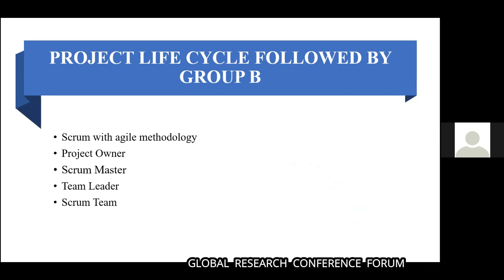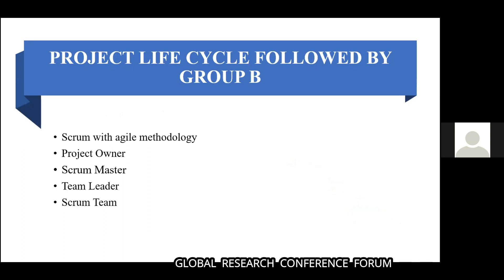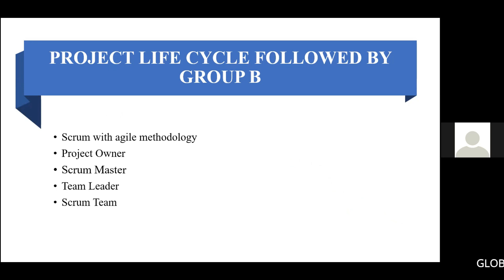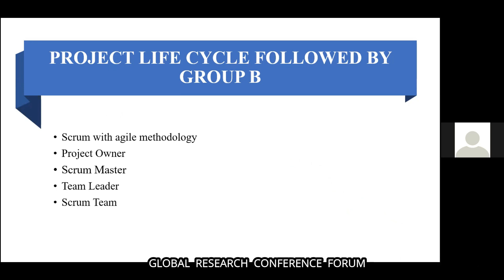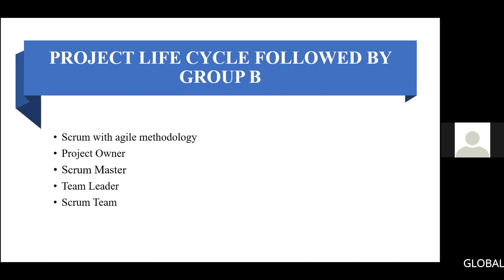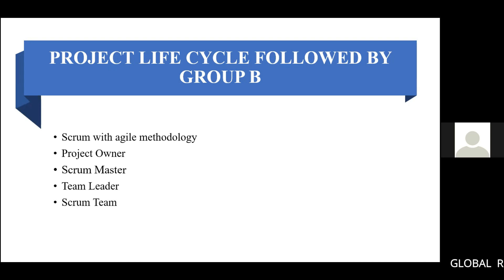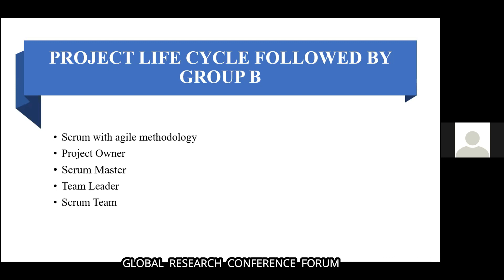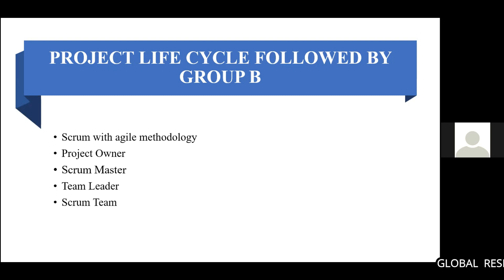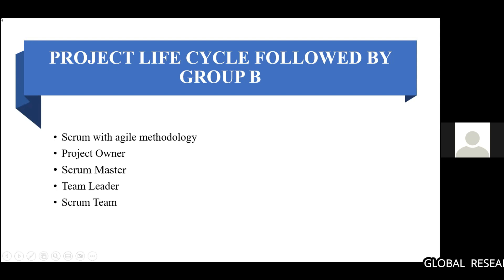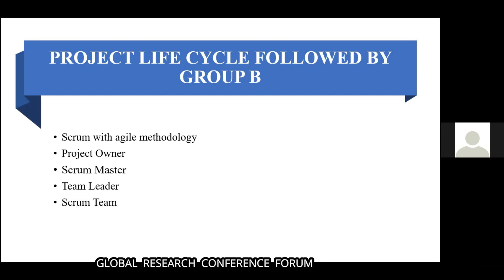For Group B, to reduce project complexity and understanding level for BCA students, a proposed Scrum model with Agile methodology was suggested, dividing tasks into smaller sprints, also called cycles. The roles in the Scrum approach were: Project Owner — the project owner decides what to be built. The subject teacher of software project management performed this role, putting forward different project topics that were student-centric, open, and modifiable to achieve the learning objectives.